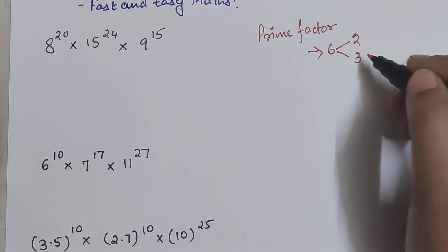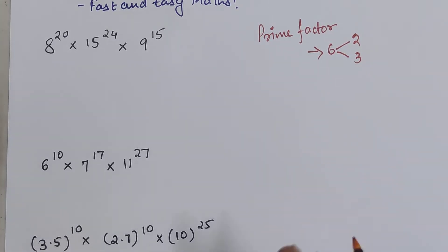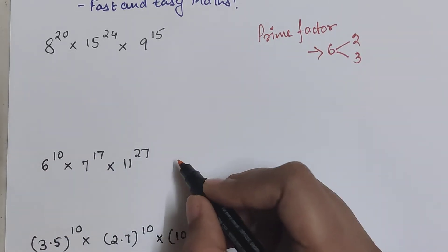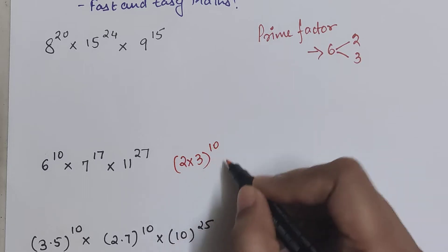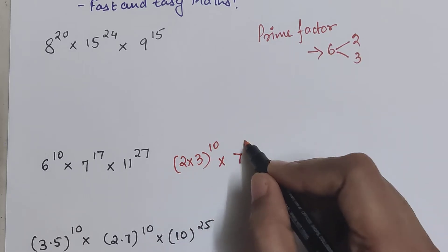So basically you represent any number in the form of its prime numbers. So here instead of 6, I can write this as 2 into 3 the whole raised to 10 into 7 raised to 17.